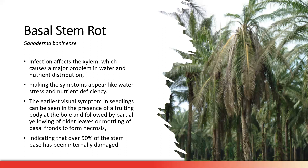The earliest visual symptom in seedlings can be seen in the appearance of a fruiting body at the base, followed by partial yellowing of all leaves, wilting of basal fronds, and necrosis. We can see yellowing in the leaves and wilting. However, when we see these symptoms — wilting or yellowing — and when we see the fruiting body of Ganoderma boninense at the base of the plant, it means we are already late.